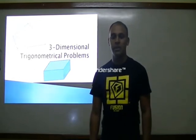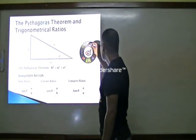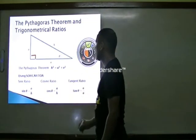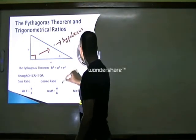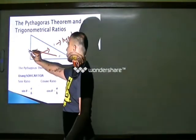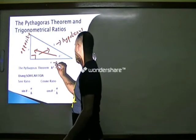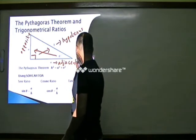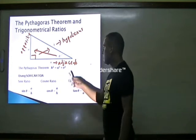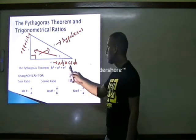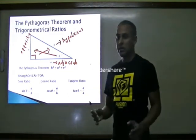First of all, let's have a look at the basic trigonometrical ratios and Pythagoras' theorem. Consider this triangle with angle theta. This is going to be the right angle. Opposite to it, we have h, which is known as the hypotenuse. Opposite to angle theta, the side is called o, the opposite. And the other side is a, the adjacent. Pythagoras' theorem states h squared is equal to a squared plus o squared — the longest side squared equals the sum of the squares of the other two sides. This is normally used when we are dealing with three sides of the triangle.